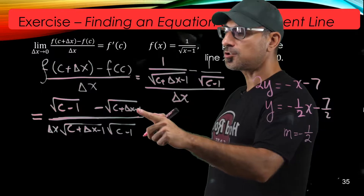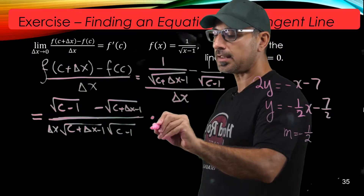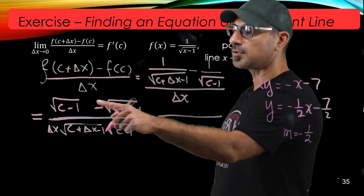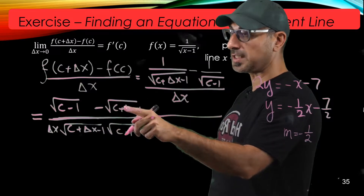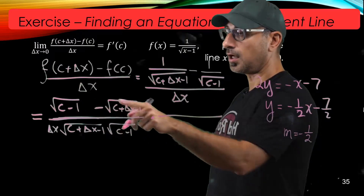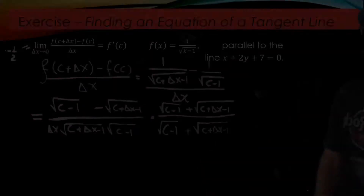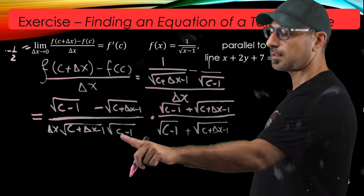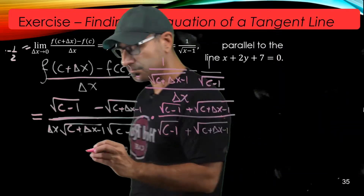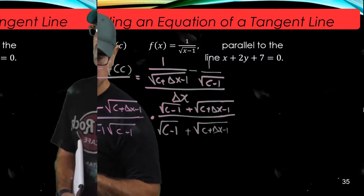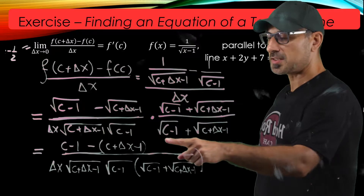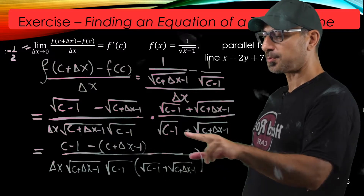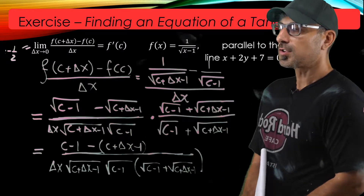To simplify further, we should multiply the top and bottom by the conjugate of the top expression, because it's the difference of two radical expressions. Now we multiply top by top and bottom by bottom. The top simplifies, and at the bottom I keep it as a product of those terms.